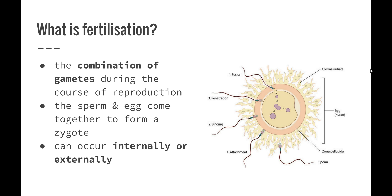We've looked at what meiosis is, which is the production of gametes. Fertilization is what happens after these gametes are produced and organisms undergo the process of sexual reproduction and the egg and the sperm come together. When the egg and the sperm come together, the first cell that is produced is referred to as a zygote, and then it undergoes massive amounts of mitosis to divide over and over again in order to produce a new organism, which then becomes an embryo, a fetus, and then eventually the offspring of the organism.